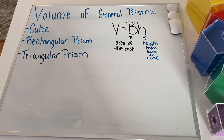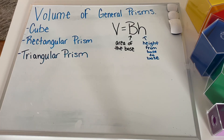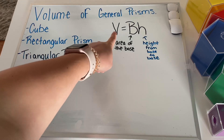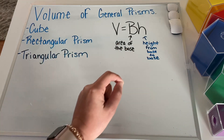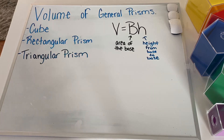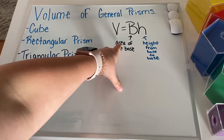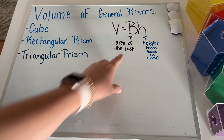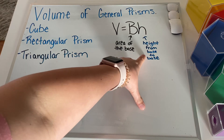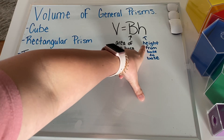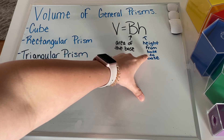The formula for general prisms is: volume is equal to big B times H. The reason we have that capital letter B is because it's not just for the bottom or the base — it's for the area of the base. So we are going to find the area of the base of our shape, and then multiply it by the height, which is measured from base to base.